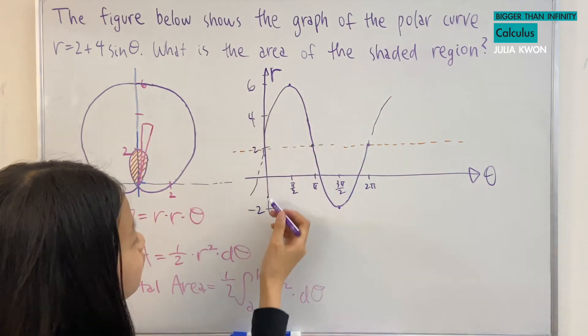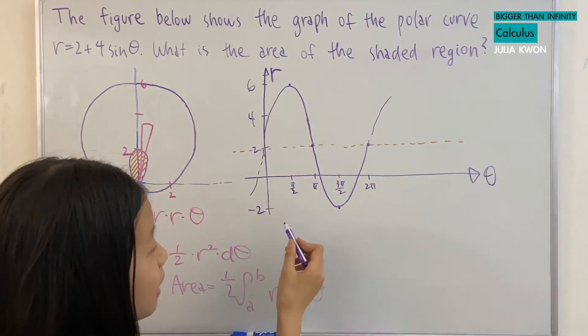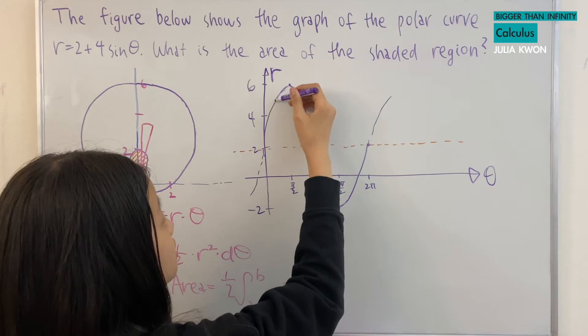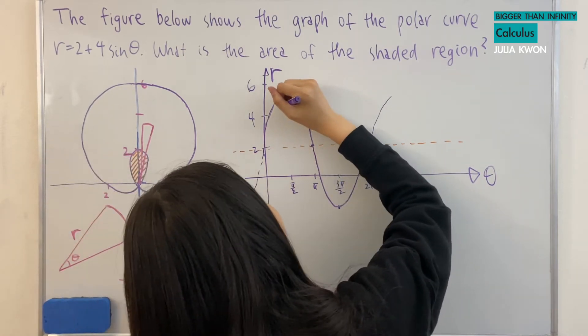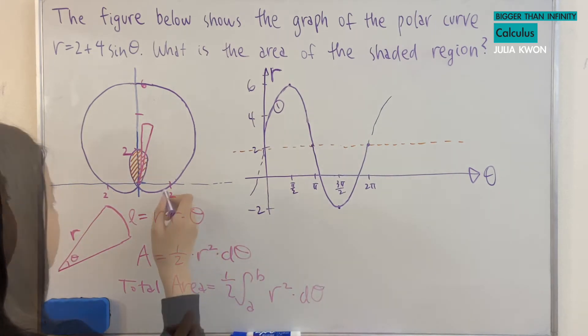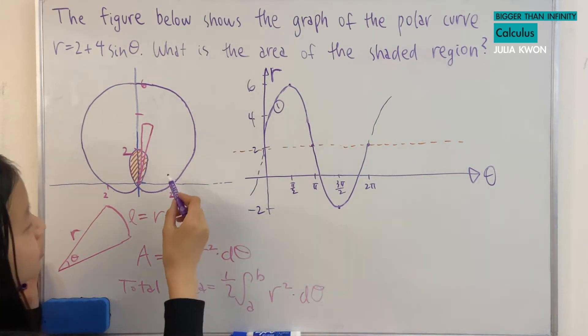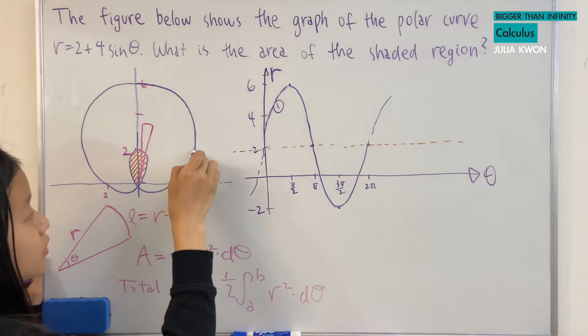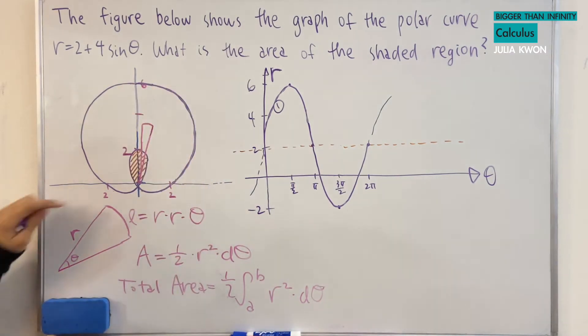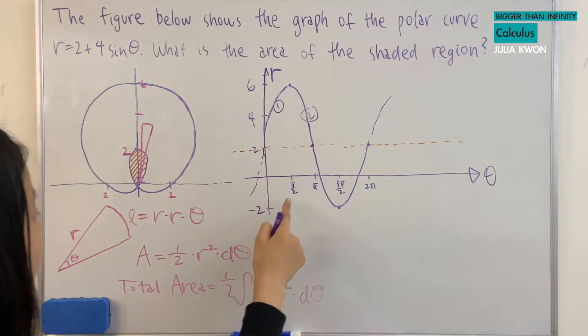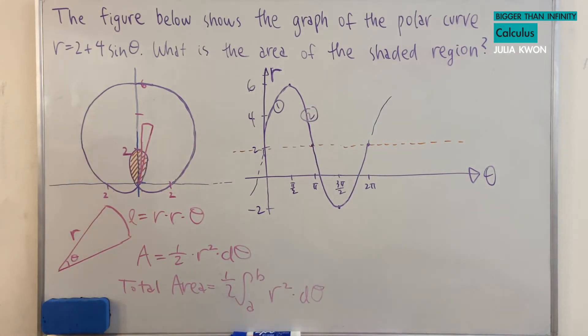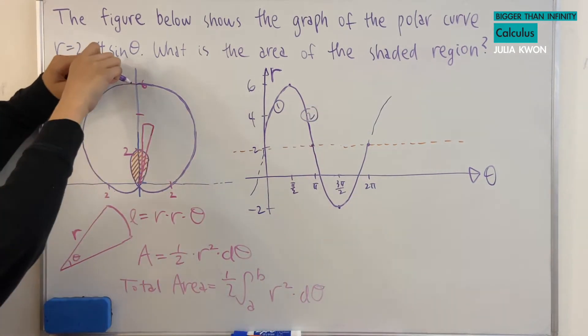The curve from theta equals 0 to pi over 2, this arc, we'll call that 1. And so when we're drawing it, that will be this length here. So this part, and the second curve from pi over 2 to pi, that will be this length.